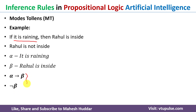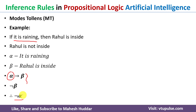The meaning is: 'If it is raining, then Rahul is inside' — but Rahul is not inside — therefore it is not raining. The conclusion is negation of alpha. So whenever we have alpha implies beta and negation of beta, the conclusion is negation of alpha. This is known as the Modus Tollens rule.